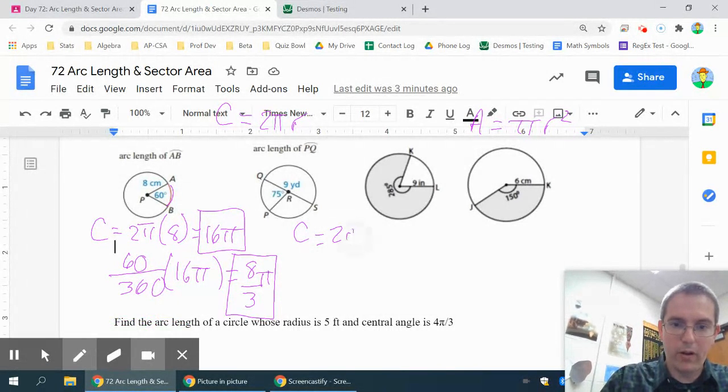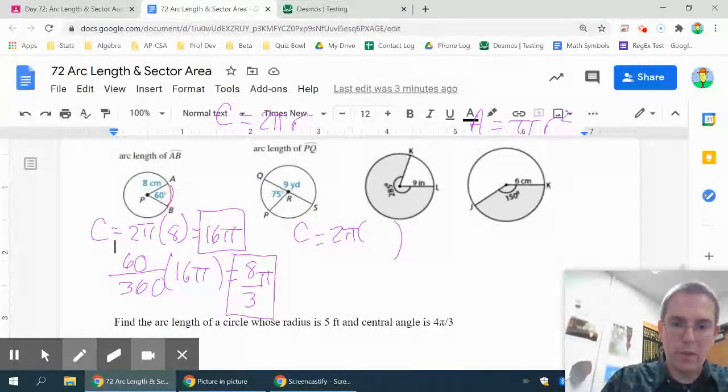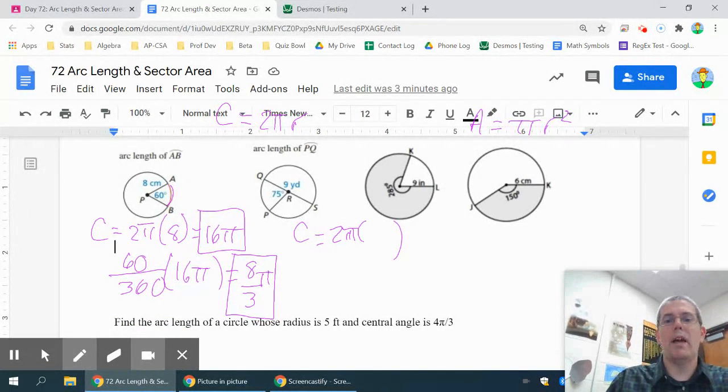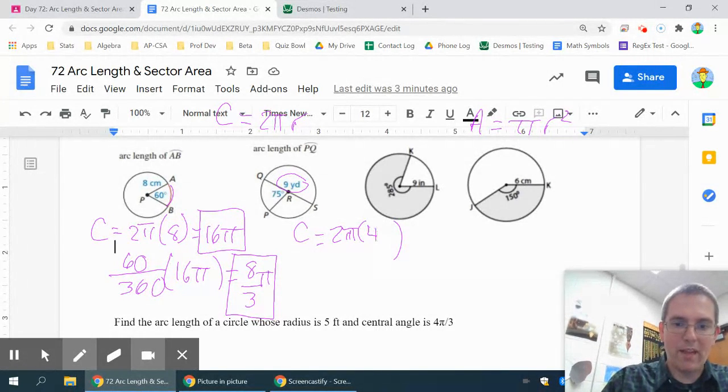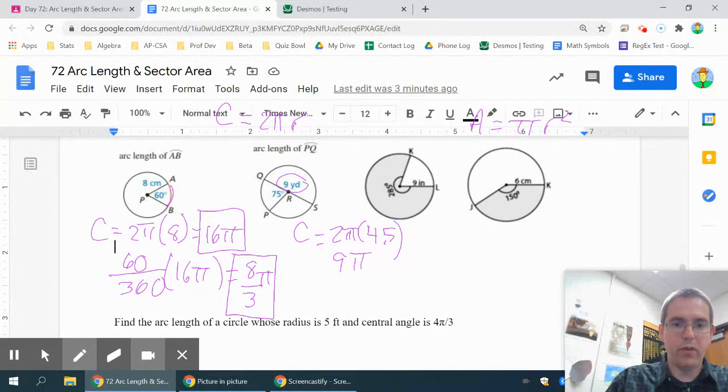circumference is still 2πr. This time, they don't give me my radius, but they do give me my diameter. So my diameter is 9. That means my radius is half of that, 4.5. So that does give me a 9π for my circumference.